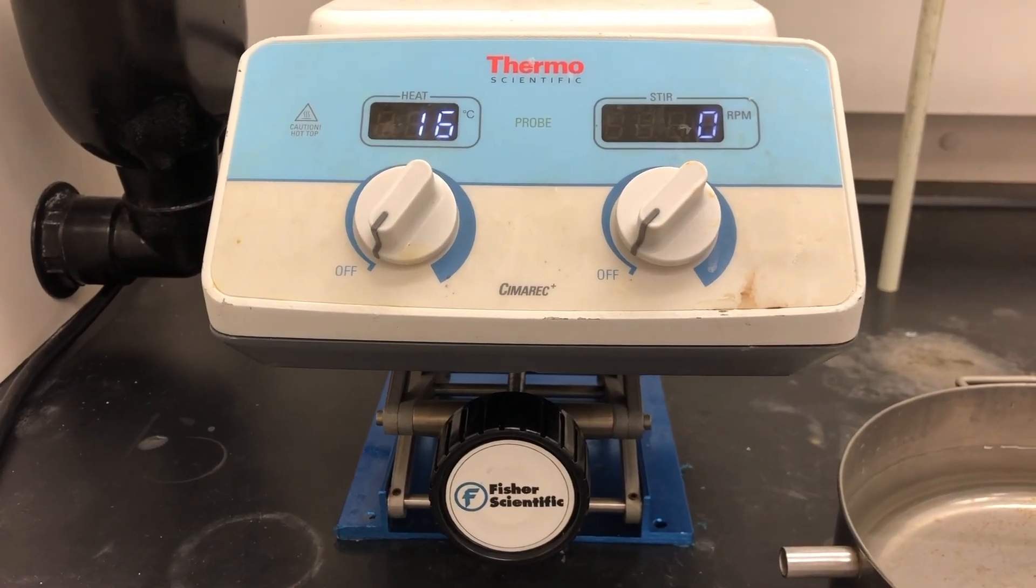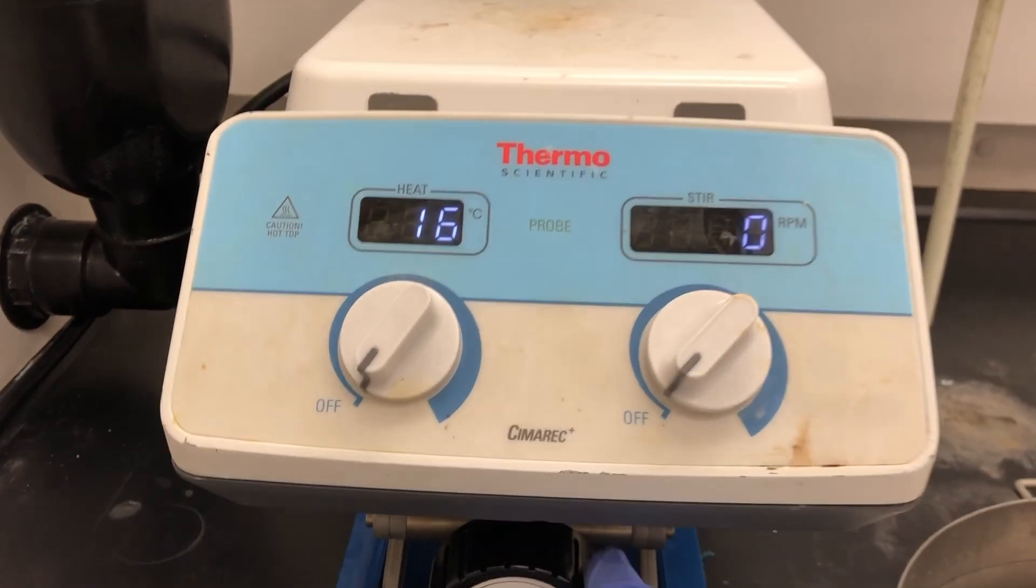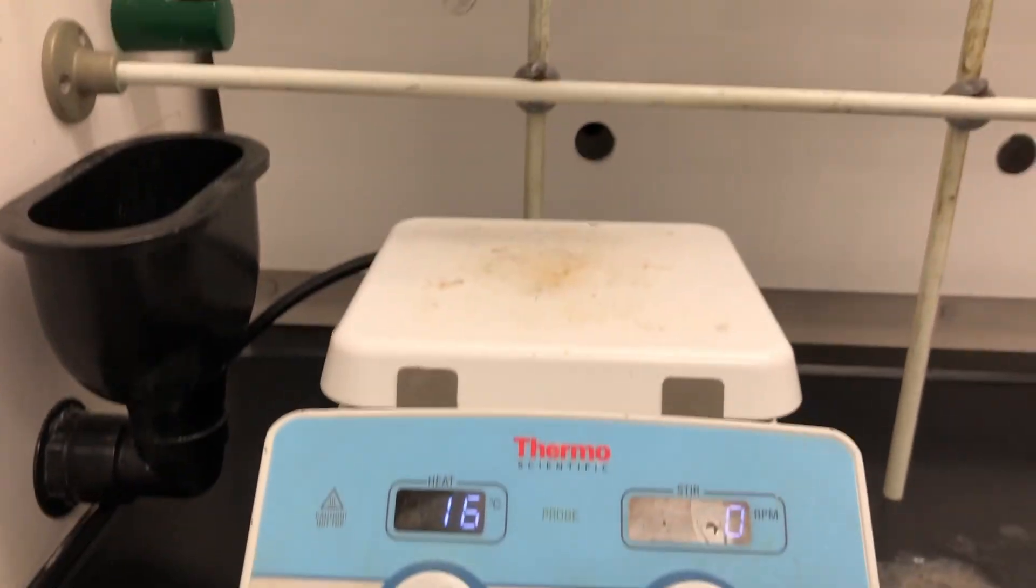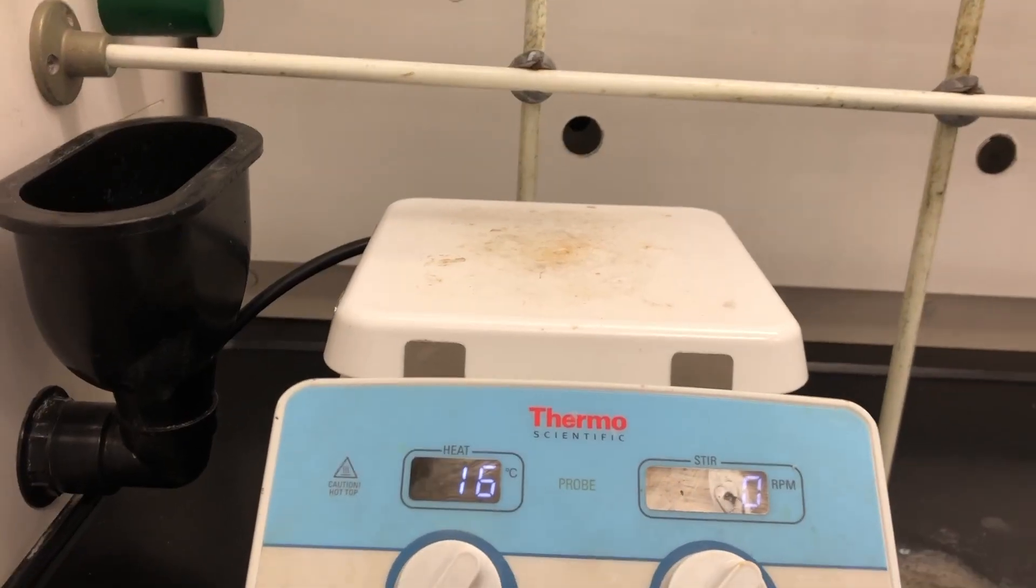Okay, so what we'll need to do is set up a hot plate on the jack. The idea of the jack is that we can lower it anytime we need to remove the reaction mixture from the water bath.